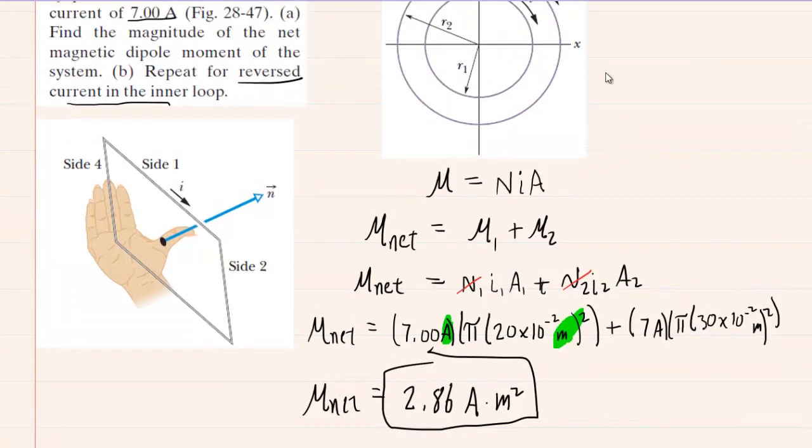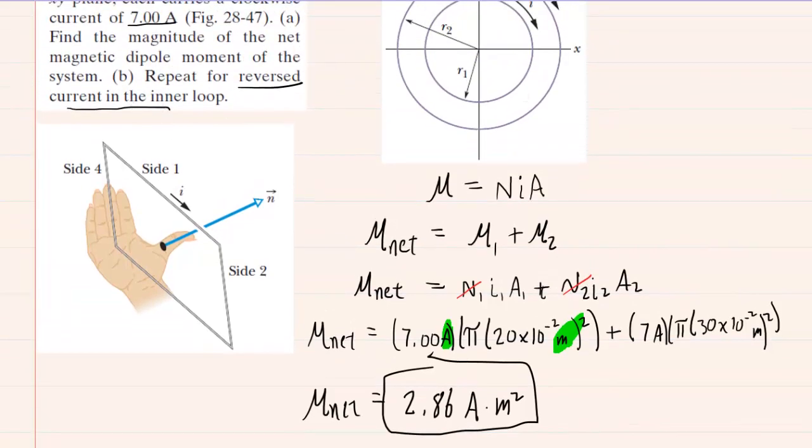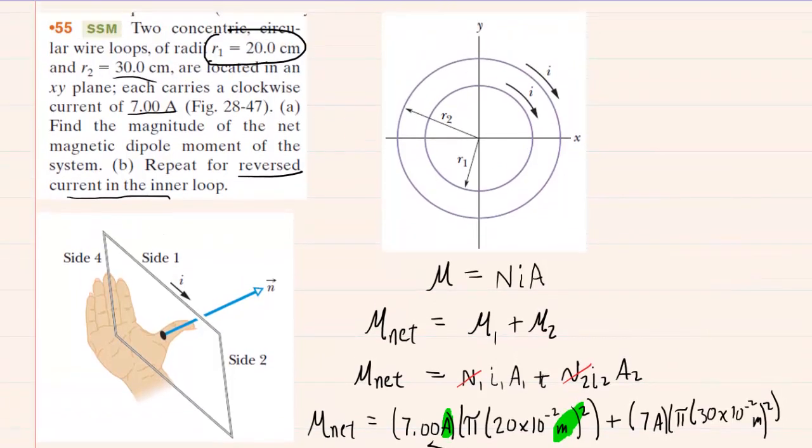In part B, recall that we are going to switch the current in the inner loop. So we can modify the picture accordingly. We can go back in here, take the inner loop current, and just reverse the direction. Since the currents are in reverse direction, the magnetic dipole moments will be in reverse direction as well. And as we noted, that means you're just simply going to subtract the values rather than add them.